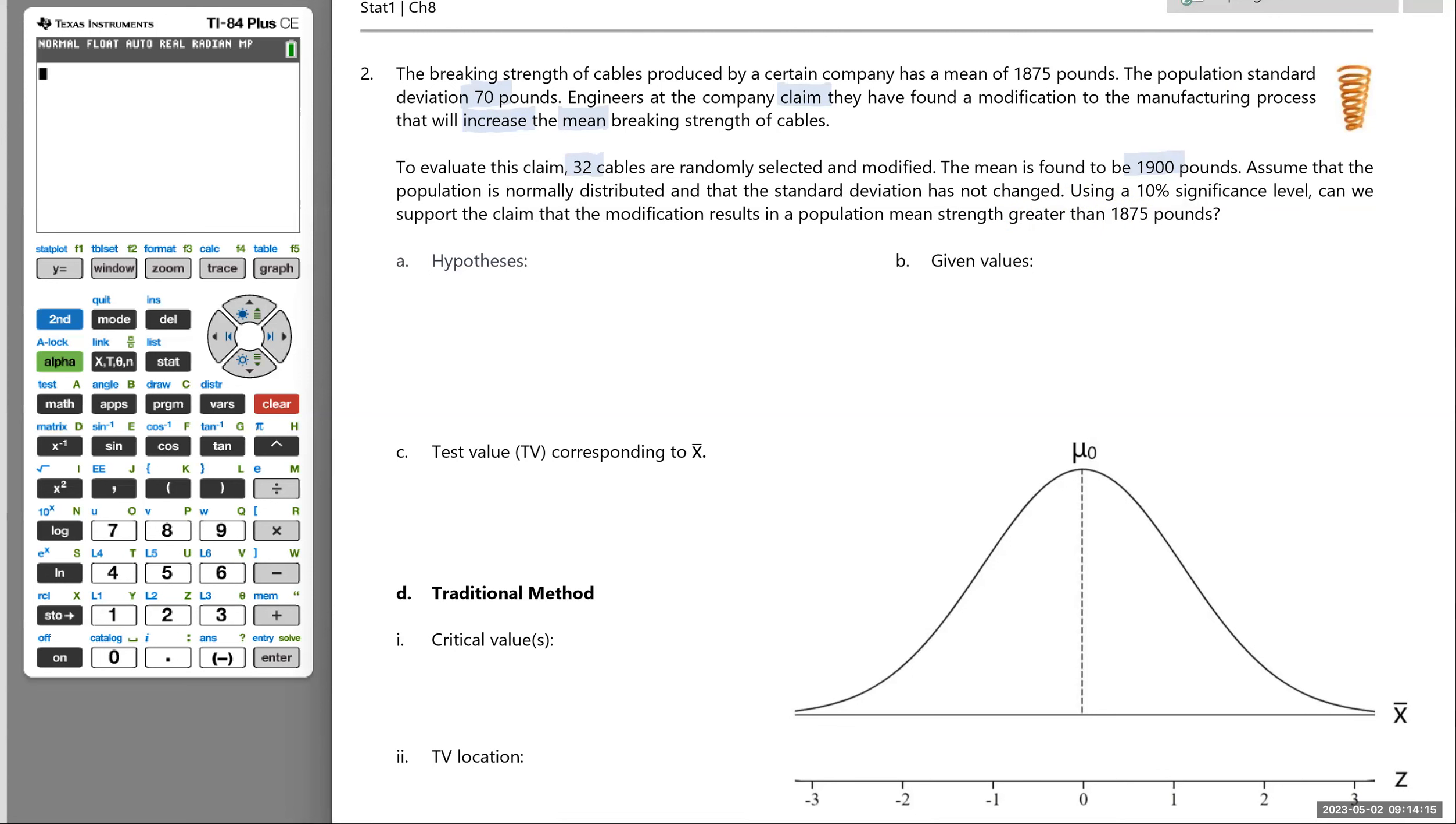All right, so we'll start with our hypotheses. So the null hypothesis H₀, the alternative hypothesis H₁, and we'll start with addressing the claim, the research hypothesis, or the alternative hypothesis, is that the population mean, so if they were to modify all their cables, they would like to test the claim that the mean breaking strength is greater than 1,875 pounds, making this a right tail test.